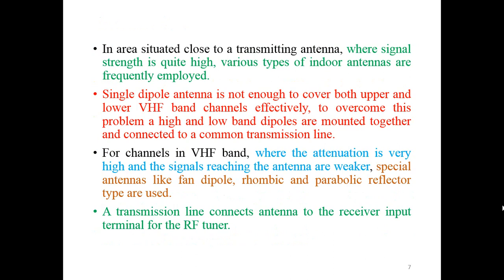In areas which are very near to the transmitting antenna where the strength is very high, various types of indoor antennas are also frequently employed — where the signal strength is very high, we can just use a wire antenna or an aerial antenna. A single dipole antenna is not enough to cover both the upper and lower band effectively. To overcome this problem, high and low band dipoles are mounted together and connected to a common transmission line. For channels in the VHF band where attenuation is very high and the signals reaching the antenna are weaker, fan dipole, rhombic, and parabolic reflectors are used. A transmission line connects the antenna to the receiver input terminal of the RF tuner.